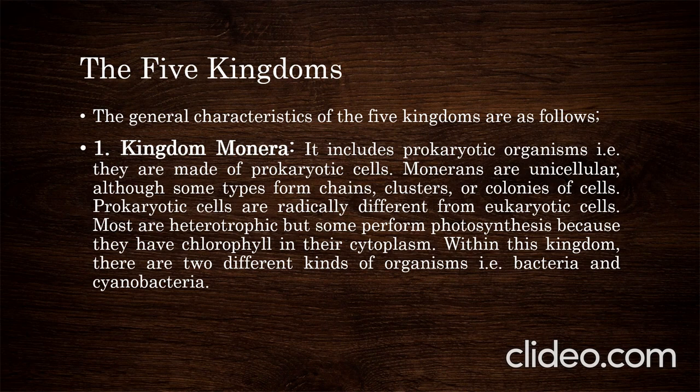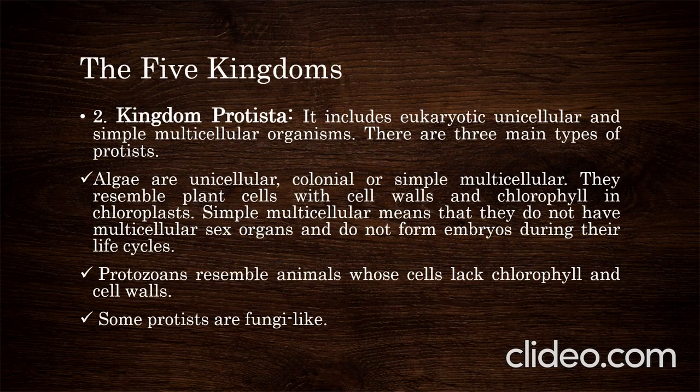Kingdom Protista includes eukaryotic unicellular and simple multicellular organisms. There are three main types of protists: algae — unicellular, colonial, or simple multicellular — which resemble plant cells with cell walls and chlorophyll in chloroplasts. Simple multicellular means they do not have multicellular sex organs and do not form embryos. Protozoans resemble animals, with cells that lack chlorophyll and cell walls. Some protists are fungus-like.